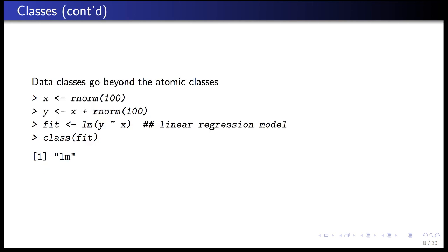Data classes can go way beyond the atomic classes. For instance, fitting a simple linear regression with the lm() function returns an object of class 'lm', which represents a fitted linear regression model. That's a new type of data, and you may want to do special things with it — for example, printing the output in a special way with a nice summary table of regression coefficients, or calling summary() on it to get standard errors and p-values. You can customize the output of a function by defining a class for its output and defining methods for that class.